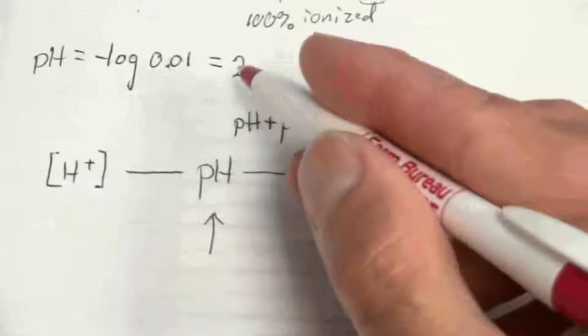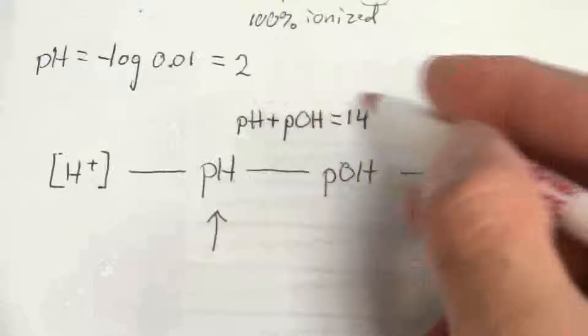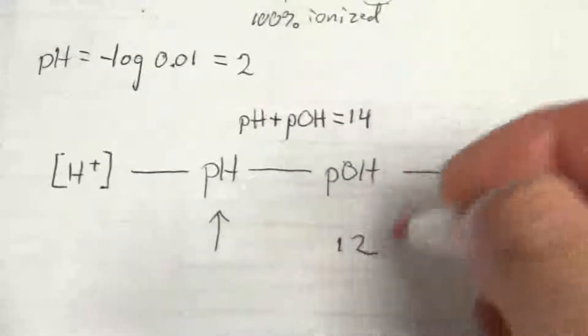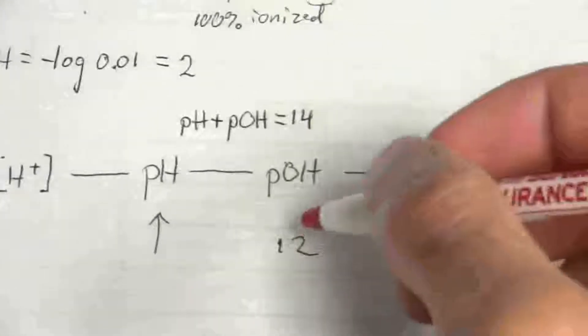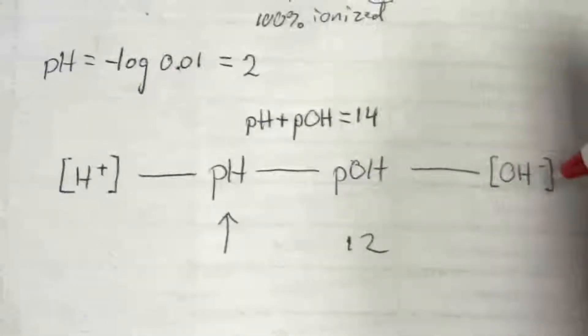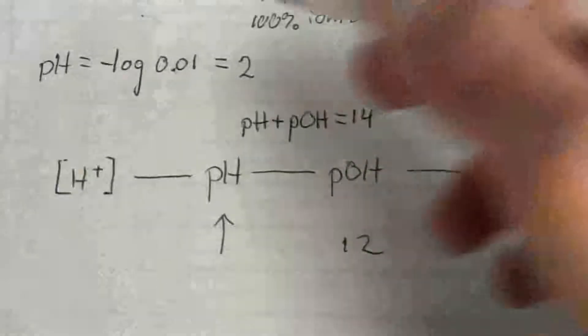So in this case, if pH is 2, 14 minus 2, my pOH must be 12. So now the question is, how do I get from pOH to the hydroxide concentration?